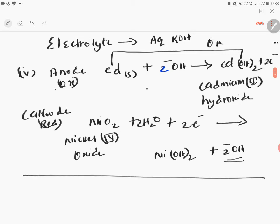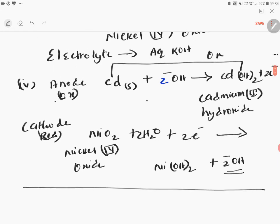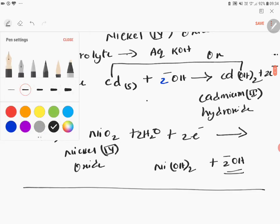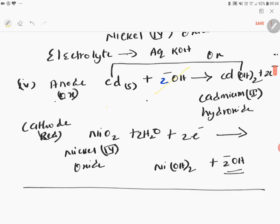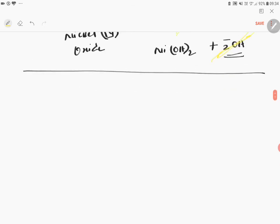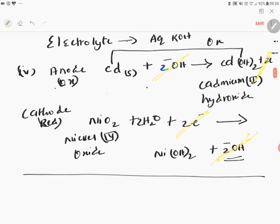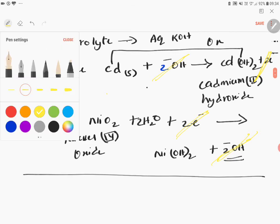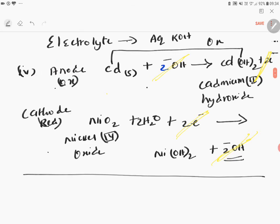You can write this molecule, nickel two hydroxide. Now you cancel the common terms. What are the common terms? 2OH⁻ cancel, then 2 electrons cancel. So therefore, what is the final equation? If you add up this you will get it.